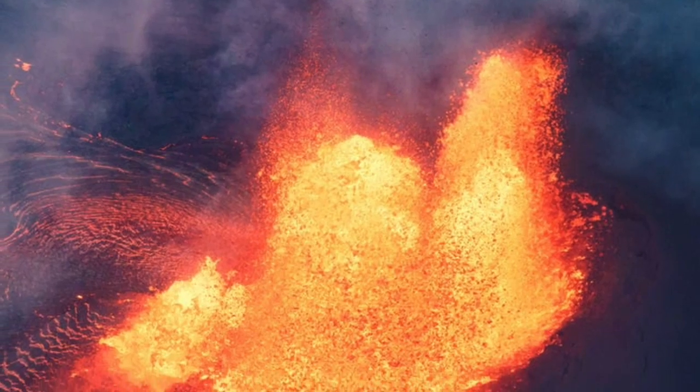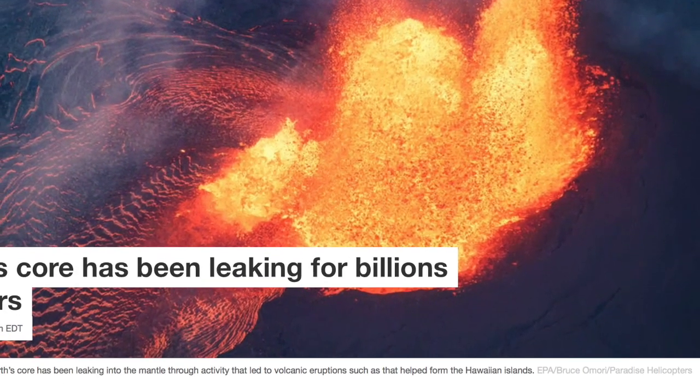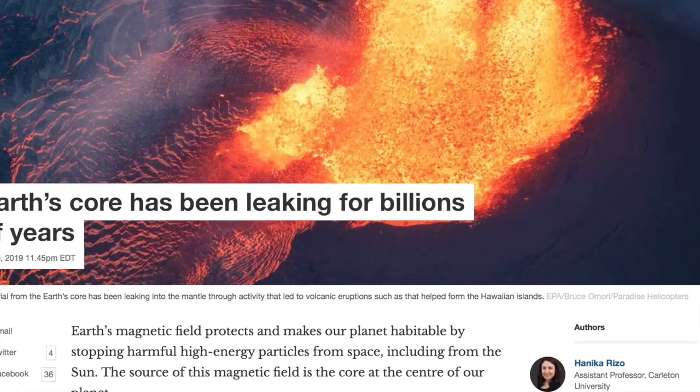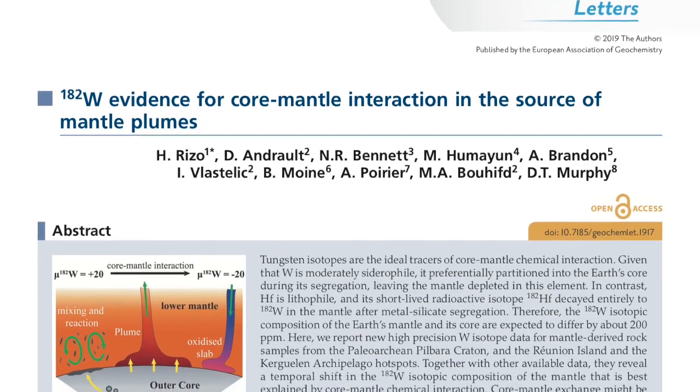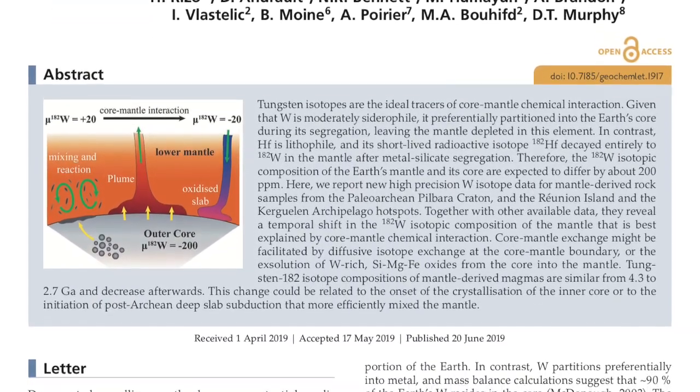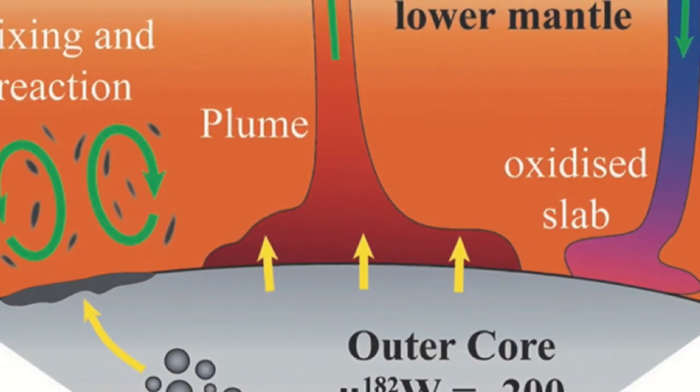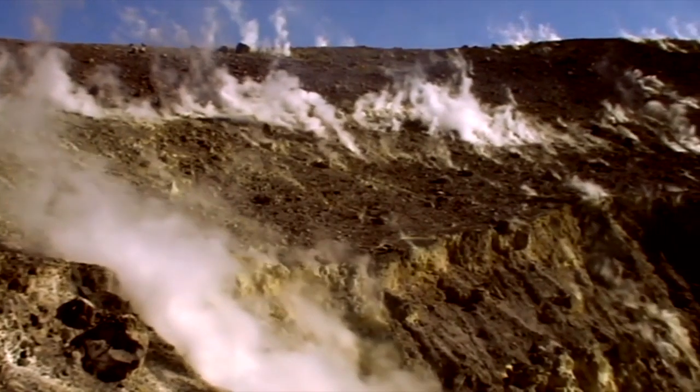It had long been thought that what happens in the core stays in the core. But a new study from Earth scientists in the United States, Canada, and France suggests that might not be true. For the first time ever, the researchers found proof that the actual core material is leaking. Magma from the outer core seems to travel through what are called plumes. This could drive the formation of volcanic islands like Hawaii and Iceland.